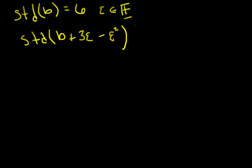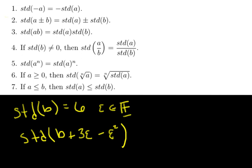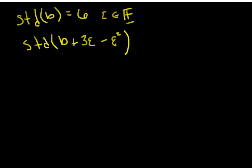I'm looking at this whole expression and want to say: what is the standard part of this new hyperreal number? I've taken some infinitesimal, I'm adding it to a hyperreal number whose standard part is 6, multiplying by 3, doing all this. This is where knowing the theorem is very useful, because it says by statement 2 that I can distribute across addition and subtraction. I can also distribute across multiplication, division, and powers.